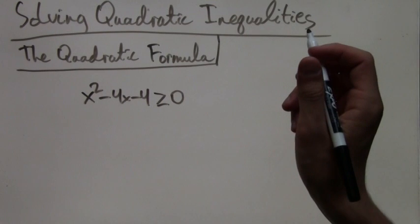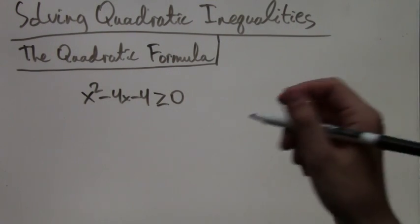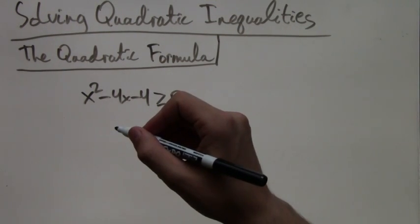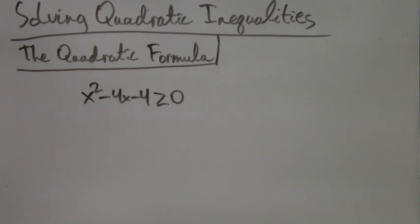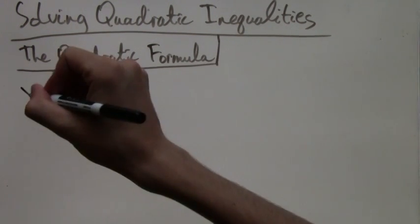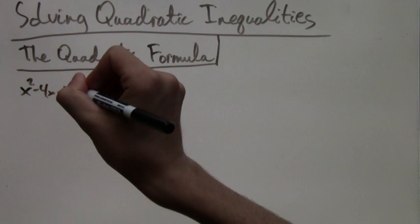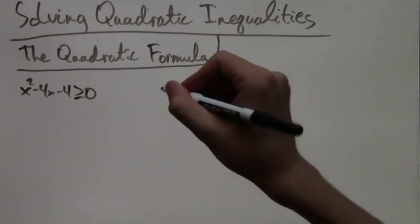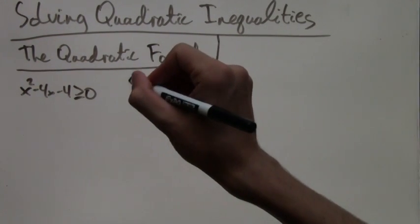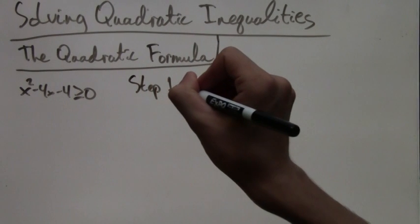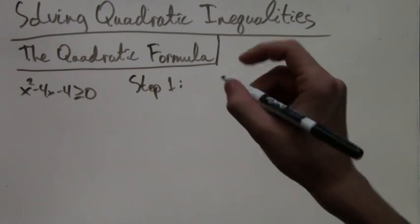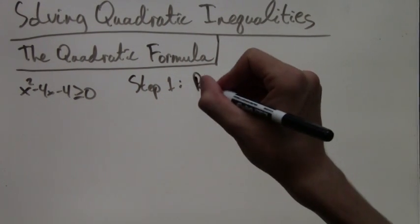The first step in solving this is finding the roots of the equation x squared minus 4x minus 4. Now I'm going to rewrite our inequality to the side so that we have enough room to do this. Step 1 is calculating the roots.